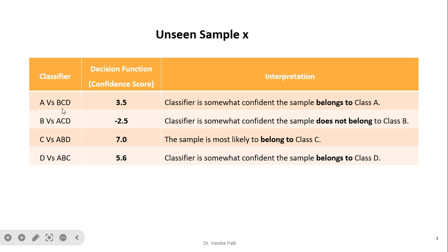For an unseen sample x: running classifier A versus B, C, D gives a distance of 3.5, indicating the sample belongs to class A with some confidence. B versus A, C, D gives a negative score, meaning the sample is not B. C versus A, B, D gives a positive score for C. D versus A, B, C gives some confidence for D. Comparing 3.5, 7.0, and 5.6, the highest distance is 7.0, so the sample likely belongs to class C.